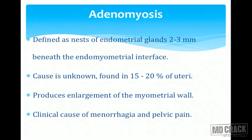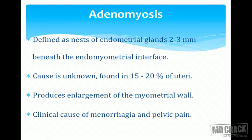Adenomyosis is defined as nests of endometrial glands 2–3 mm beneath the endomyometrial surface. Microscopically, it should be seen at least one low power field (at 10x) beneath the endometrial interface — meaning the endometrial glands must be seen at least in the middle of the myometrium. The cause is most often unknown. It is seen commonly in hysterectomy specimens, in around 15–20% of uteri.